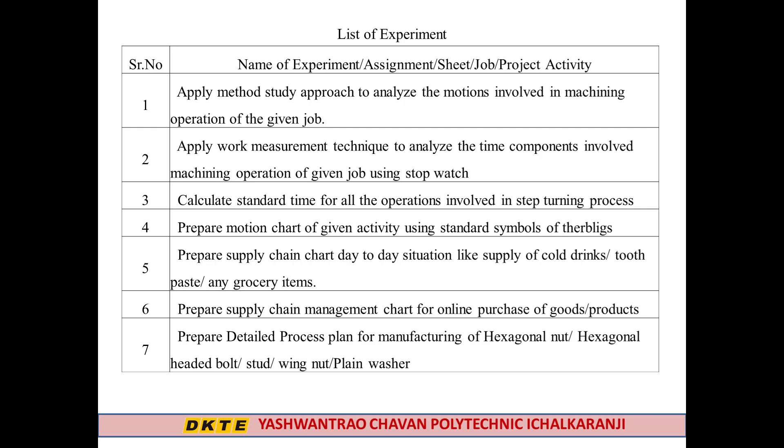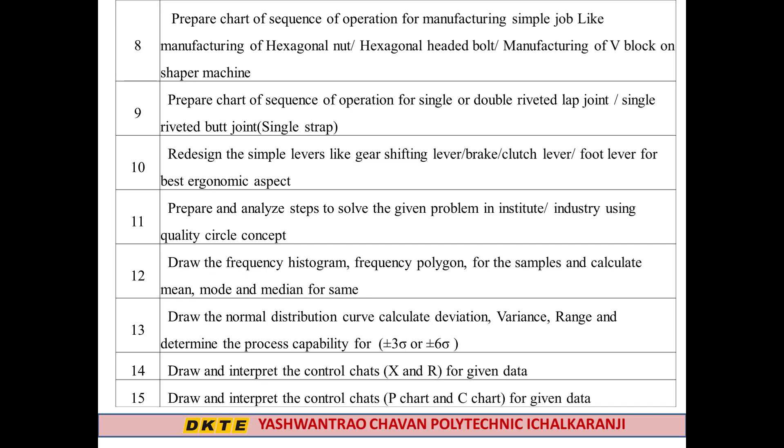The seventh experiment is to prepare a detailed process plan for manufacturing of hexagonal nut, hexagonal headed bolt, stud, wing nut, and plain washer. The eighth is to prepare a chart of sequence of operations for manufacturing simple jobs like hexagonal nut, hexagonal headed bolt, and three blocks on a shaper machine. The ninth is to prepare a chart of sequence of operations for single or double riveted lap joint or single riveted butt joint. The tenth is to redesign simple levers like gear shifting lever or brake/clutch lever for best ergonomic aspects. The eleventh is to prepare and analyze steps to solve problems in an institute or industry using a quality circle concept.